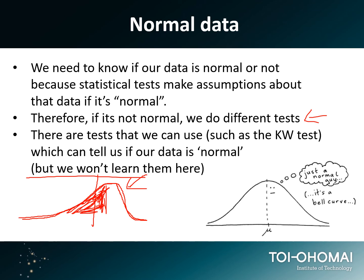We do different tests if the data is not normal, and there are tests to find out whether your data set is normal or not. You might then use something like Kruskal-Wallis, Mann-Whitney, or sign tests — these are called the non-parametric equivalent tests. We're not going to cover them here due to time, but as you go on in your science career you'll come across non-normal data sets. For now, we'll assume that our data is normal in the tests we're going to do.